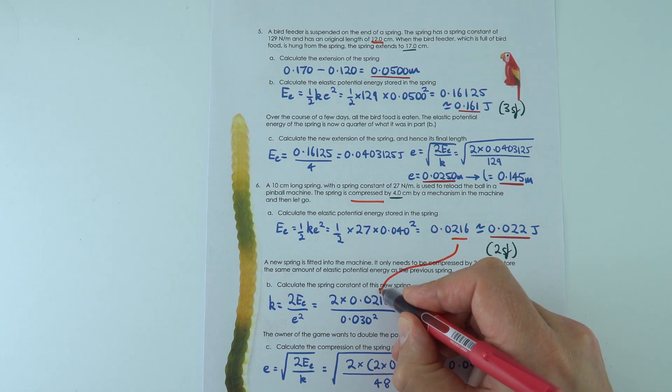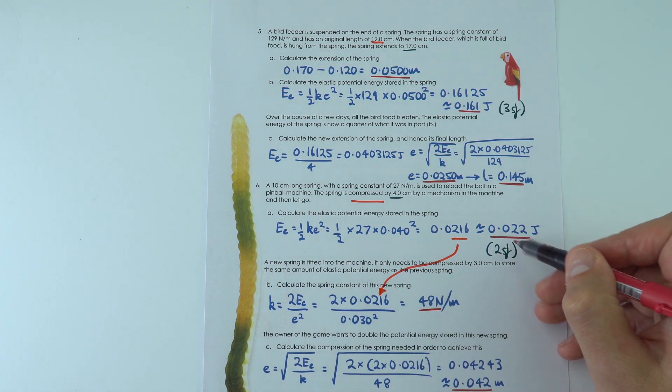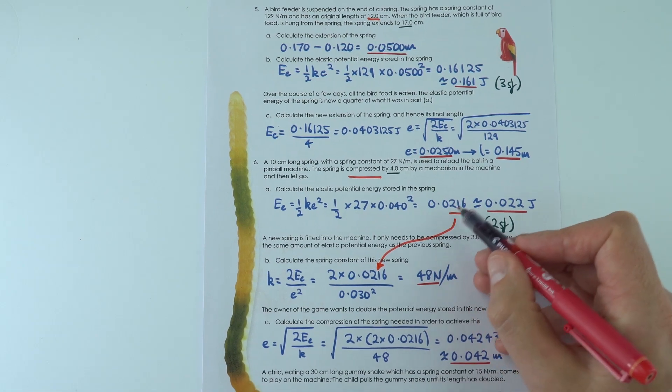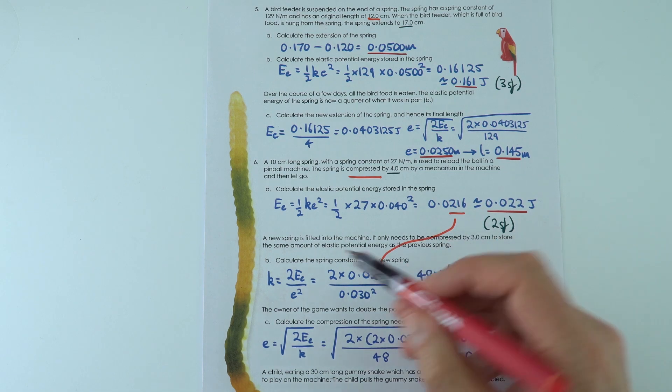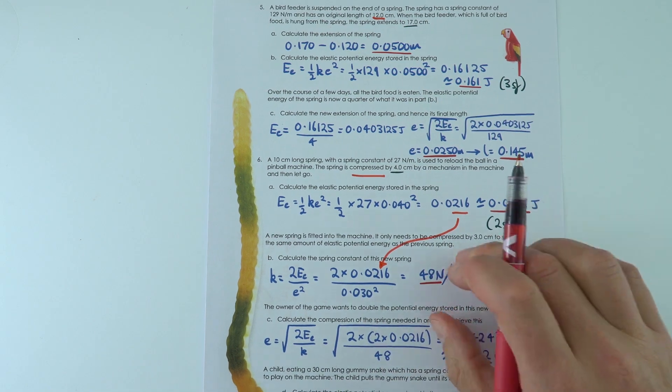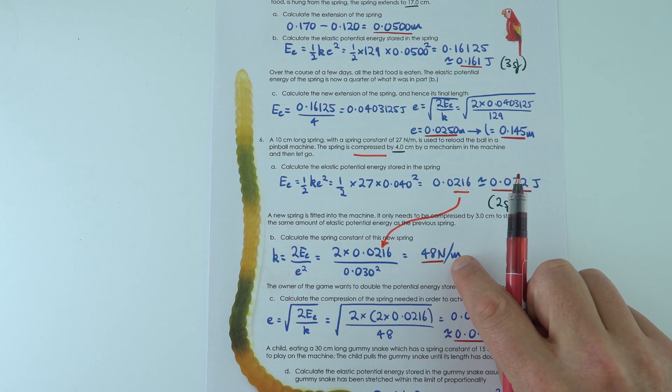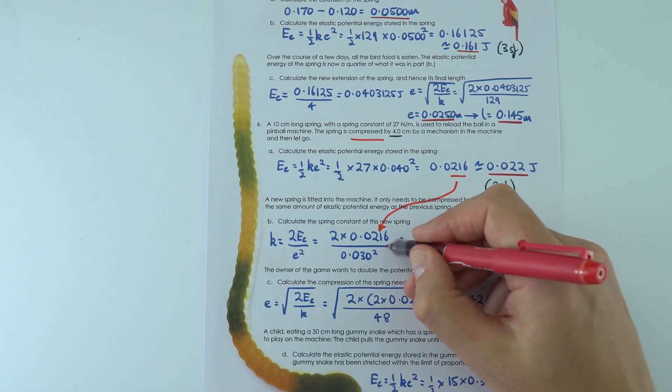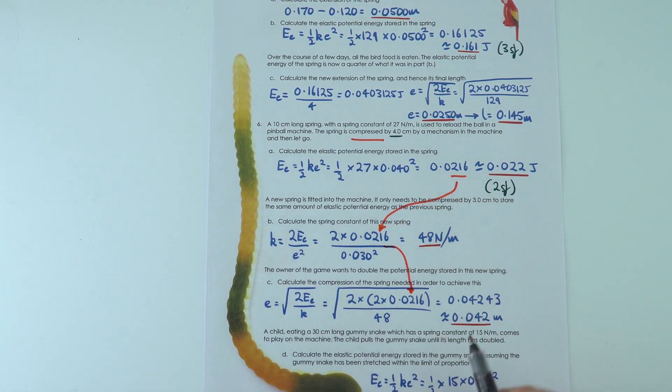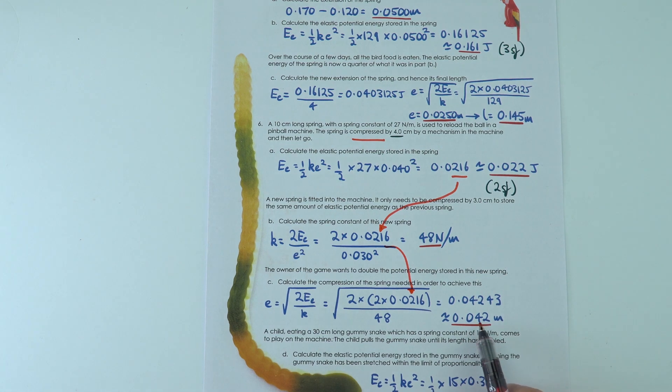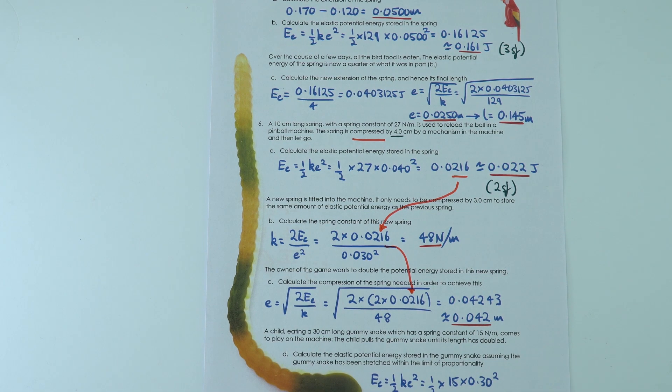I've then used this value over here in the next bit of the calculation. So not my rounded down answer, but I use my raw data from the calculator to work out the spring constant of the new spring is 48 newtons per meter. And then I've used again this value here over here to work out the compression is about 4.2 centimeters.